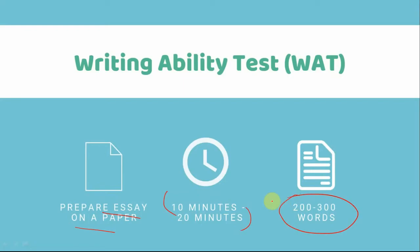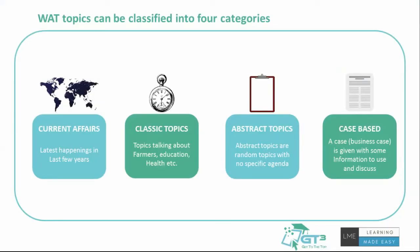WAT topics can be classified into four categories — similar to what we covered in our group discussion video. The first is current affairs: the latest happenings in the last few years. It could be about demonetization, the Statue of Unity that opened recently, the budget, or recent terrorist attacks — topics that have been in the news in the last couple of years.